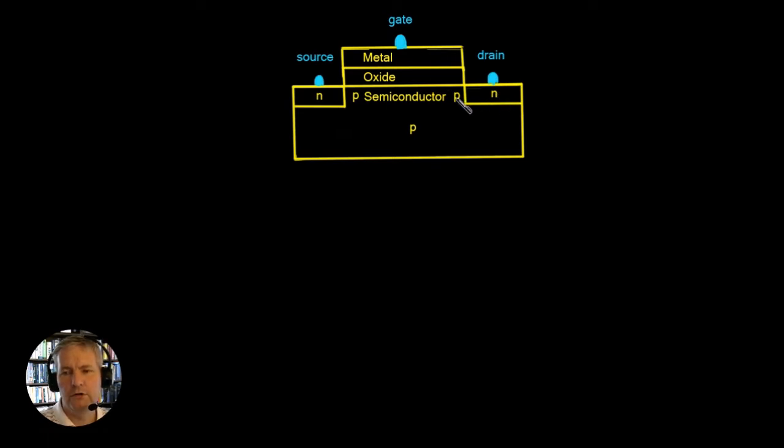Now the MOSFET gets the name MOS from the sandwich structure between a metal conducting layer here. So this is the metal layer, the M and then we have an insulating layer. Now the insulating layer is made up of something called an oxide. So that's the large O and we then have the semiconductor layer which in this case is a P type and this is the semiconductor and this is how we get the term metal oxide semiconductor.